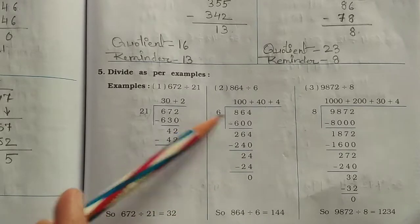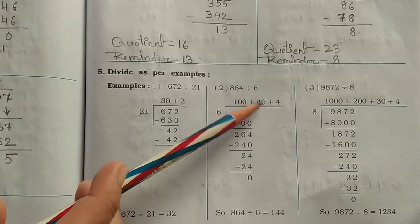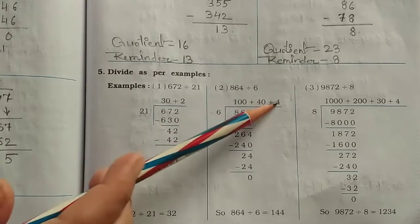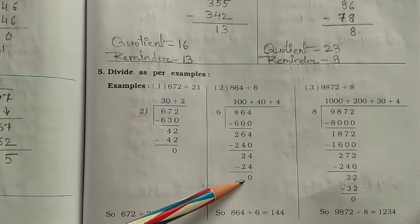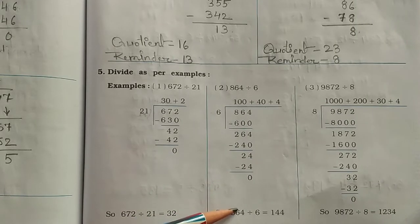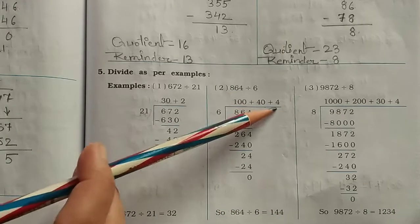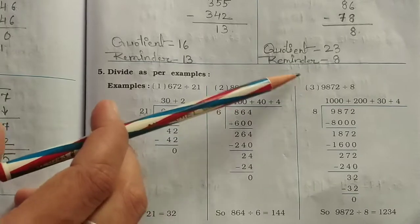Plus 40: 6 40's are 240. Subtract it — you will get 24. Now it's 24. Come to the 1's: 6 4's are 24, and 0 is the remainder. So the answer is 100 plus 40 plus 4. 864 divided by 6 is 144. When you add all this, you will get that 3-digit number.